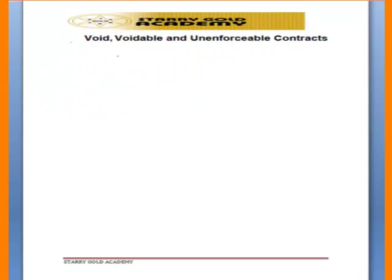Now let us look at void, voidable, and unenforceable contracts. A void contract is a contract that is illegal from the beginning — void ab initio. The court will not recognize it because parties should never have entered into it. Examples include a contract to kill someone or to kidnap someone. These are void contracts — illegal from the moment of formation.